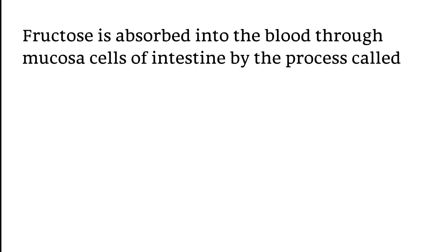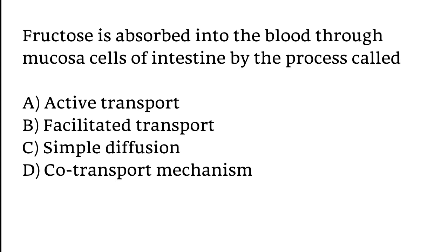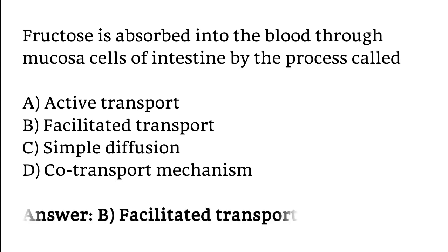Fructose is absorbed into the blood through mucosa cells of the intestine by the process called: active transport, facilitated transport, simple diffusion, co-transport mechanism? The correct answer is option B. Fructose is absorbed into the blood through mucosa cells of the intestine by the process called facilitated transport.